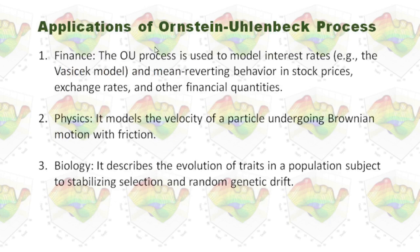We use the Ornstein-Uhlenbeck process in many fields. First, the OU process is used to model interest rates — for example, the Vasicek model — and mean-reverting behavior in stock prices, exchange rates, and other financial quantities. It can also be used in physics to model the velocity of particles undergoing Brownian motion with friction, and in biology.